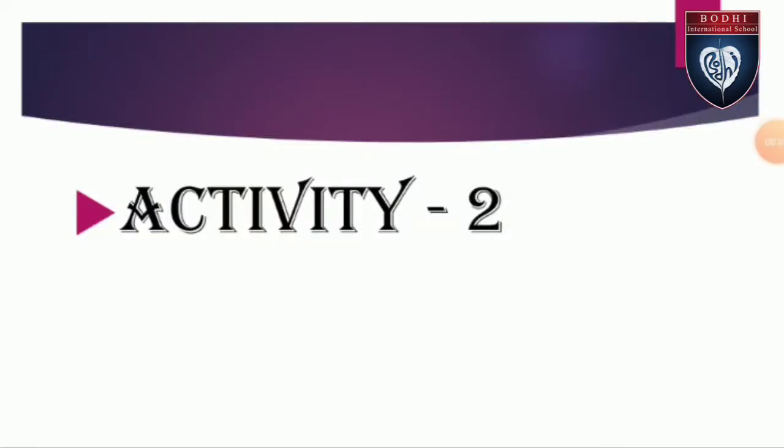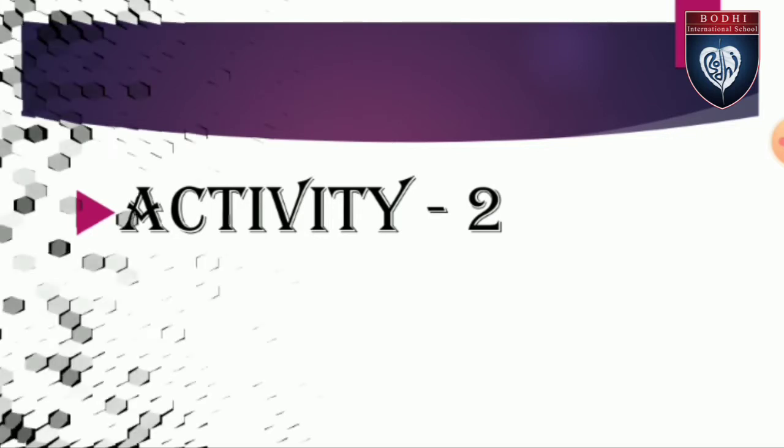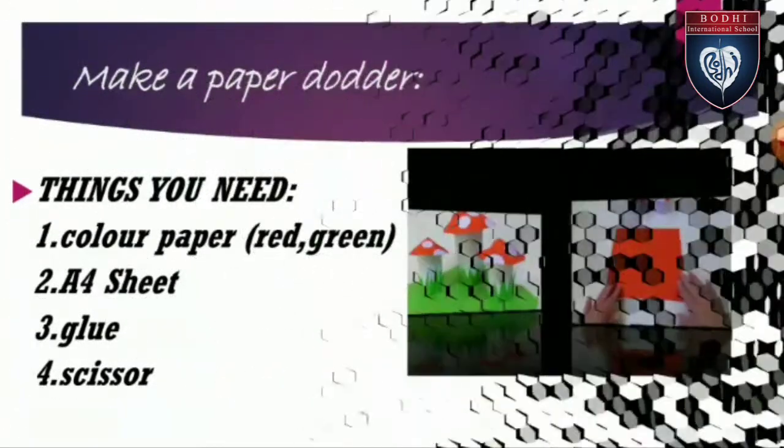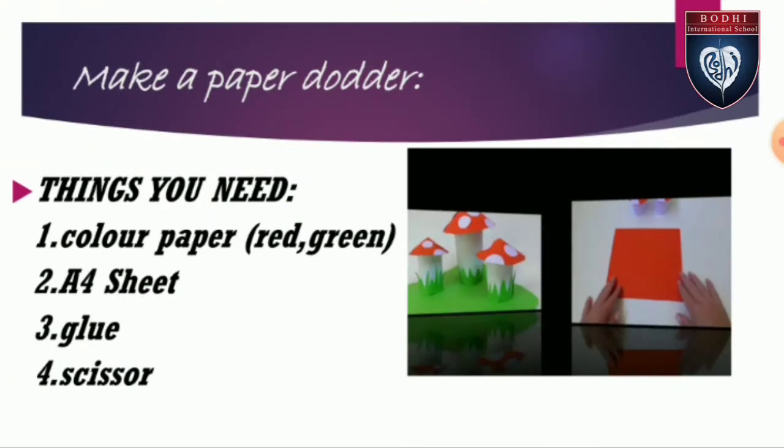Activity 2. Now you are going to do an activity based on these: make a paper daughter. Things you need: first, color paper, one of red and one of green. Two, A4 sheet. Three, glue. Four, scissor.